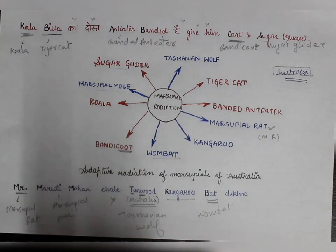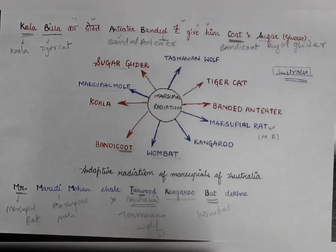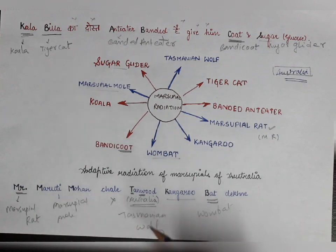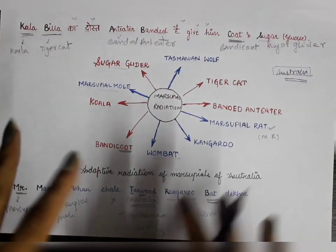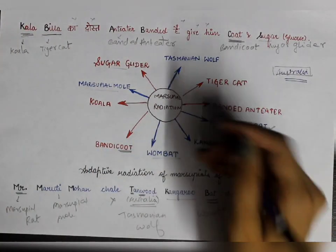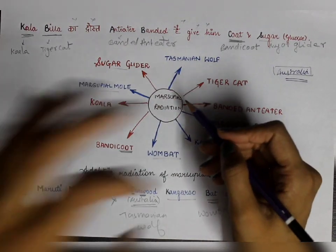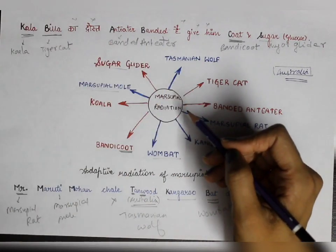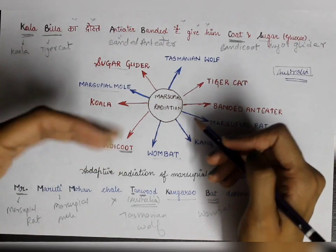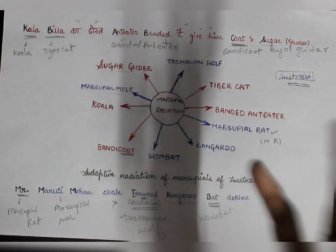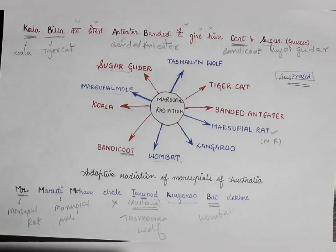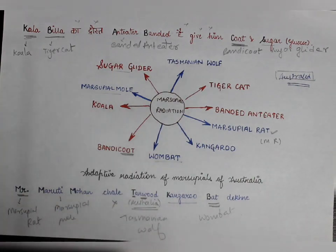So in this mnemonic you have learned five species: marsupial rat, marsupial mole, Tasmanian wolf, kangaroo, and wombat. With two mnemonics you have all 10 animals which have been radiated from one single point — adaptive radiation. Adaptive radiation means it adapts to the environment and radiates into different species — that is adaptive radiation.